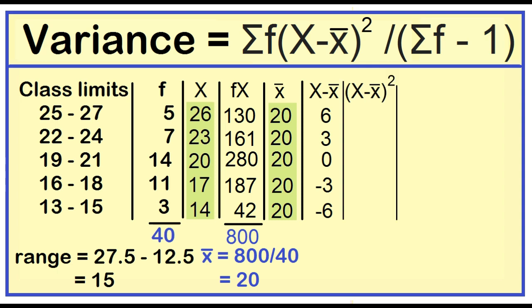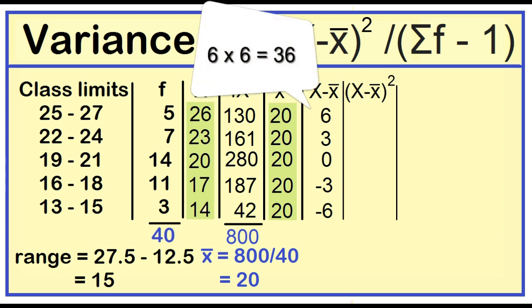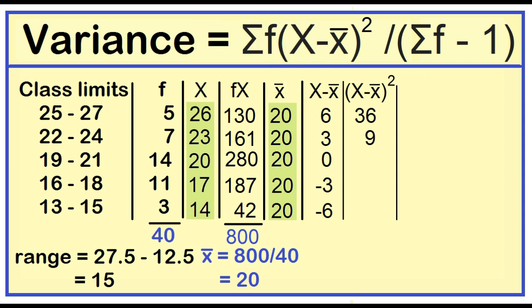Next, square the deviations. 6 times 6 is 36. 3 times 3 is 9. 0 times 0 is 0. Negative 3 times negative 3 is 9. Negative 6 times negative 6 is 36.